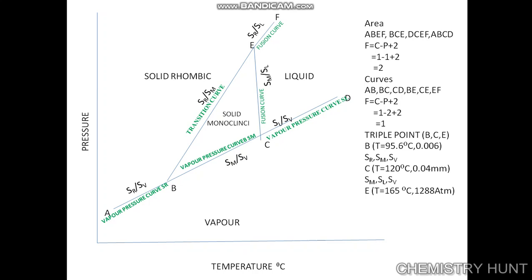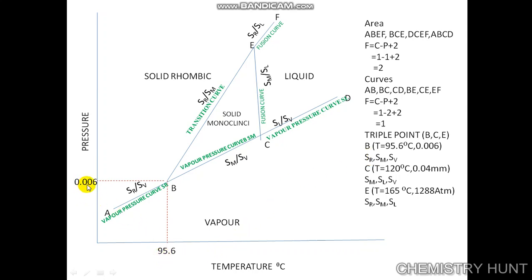In the sulphur system there are three triple points: B, C, and E. The first is point B, at a temperature of 95.6 degrees Celsius and pressure of 0.006 mm. At this point, sulphur rhombic is in equilibrium with sulphur monoclinic, which is in equilibrium with sulphur vapour. All three phases can coexist only at 95.6°C and 0.006 mm pressure.